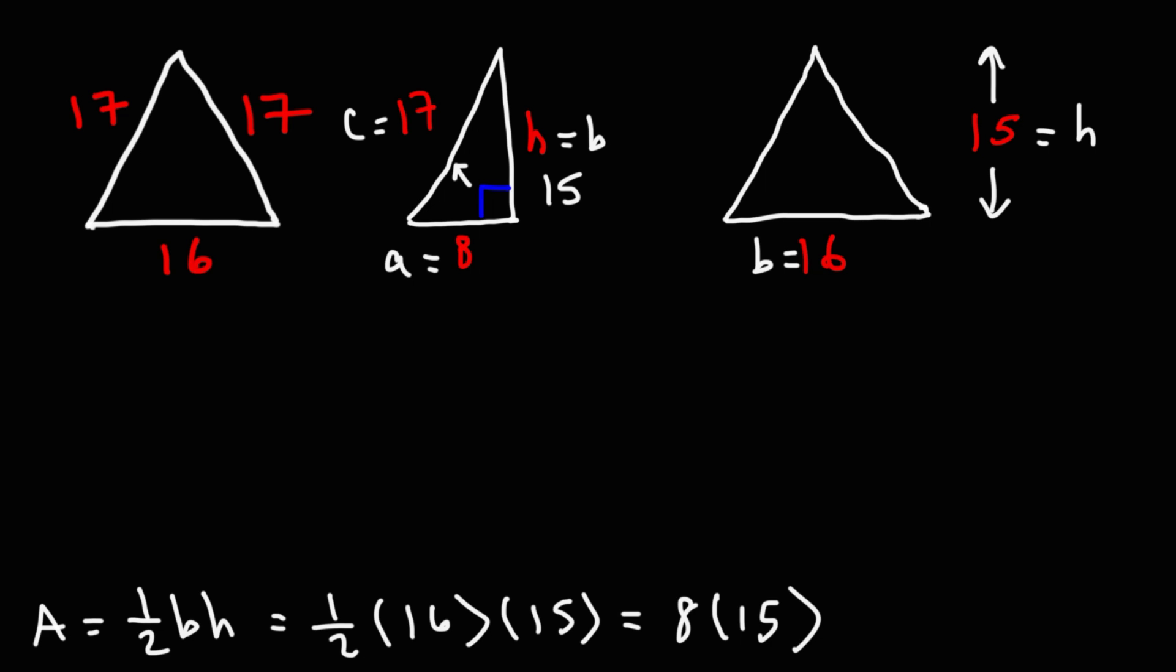If you want to do it mentally, you can write it this way. 15 is 10 plus 5. 8 times 10 is 80. 8 times 5 is 40. So, this is going to give us 120. So, that is the area of this particular isosceles triangle. It's 120 square units.